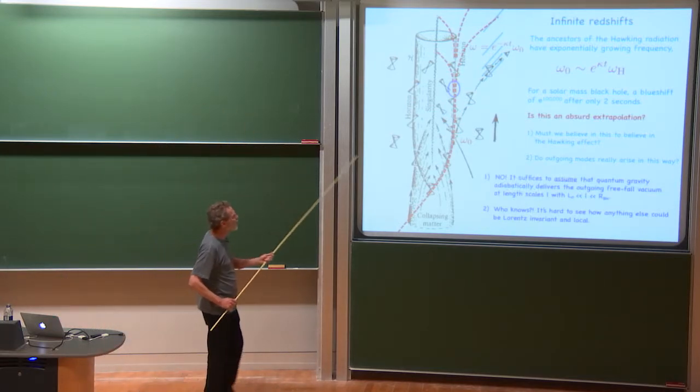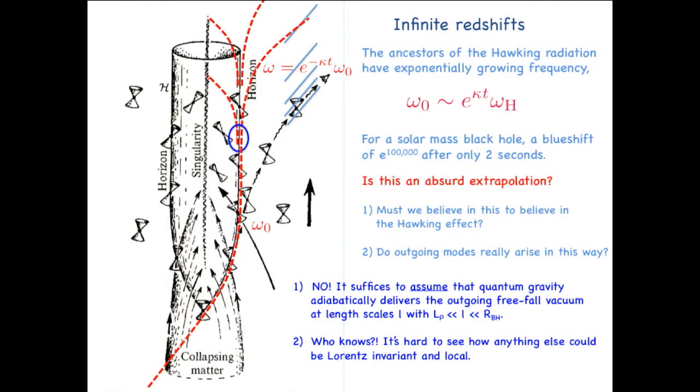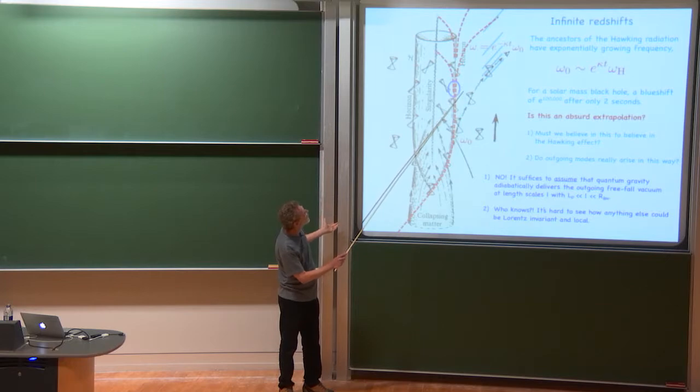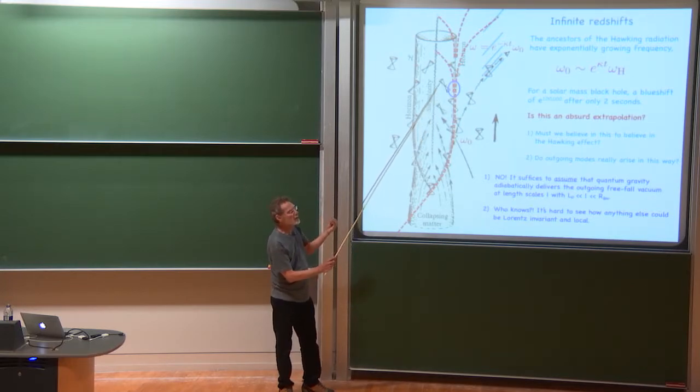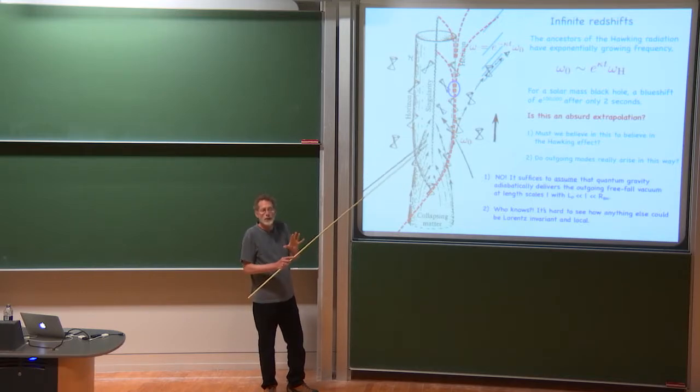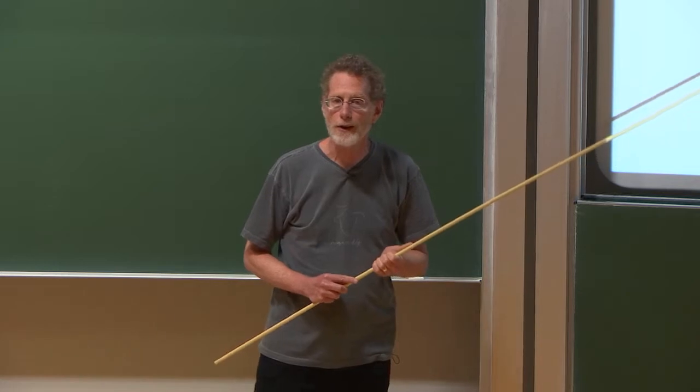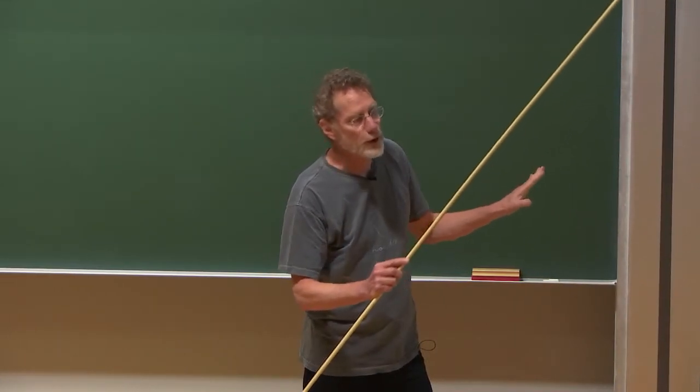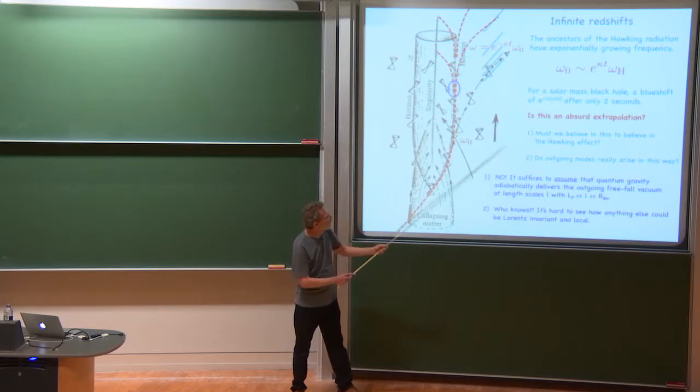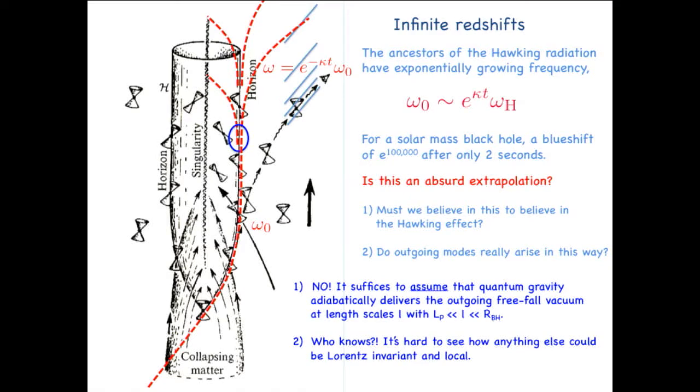So the answer to the first question is no. We don't have to believe in this absurd extrapolation because, as I've just circled here, instead of tracing, let's say, this Hawking quantum all the way back to the beginning of the formation of the horizon, we can just trace it back far enough until the sort of length scale associated with its wavelength and its frequency is very small compared to the size of the black hole. On the other hand, that can be still very long compared to the Planck scale or any other scale that we feel is a frontier of our knowledge.